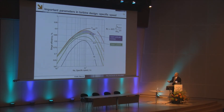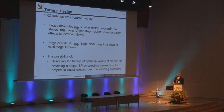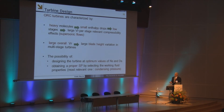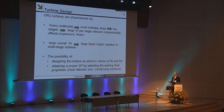This is a general correlation of efficiency of a single stage versus specific speed. Open cycle gas turbines and steam turbines stay in a certain range and are not greatly affected by the volumetric ratio per stage because it is relatively small. In organic Rankine cycles, heavy molecules mean small enthalpy drop, small enthalpy drop means few stages, and few stages means large volume ratio per stage. There are relevant compressibility effects, mainly supersonic flows. A large overall volume ratio also requires large blade height variation in multi-stage turbines.